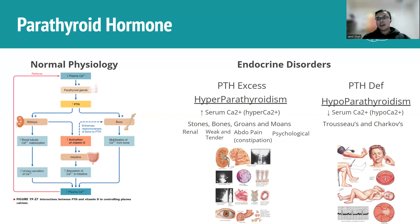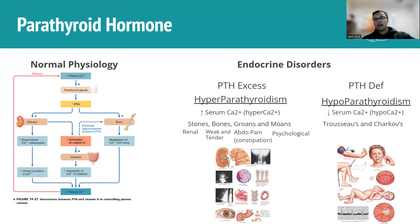Trousseau's sign: clamp the patient's arm with a blood pressure cuff and look for a carpal-pedal spasm, where the hand twitches at the wrist and fingers. Chvostek's sign: tap the facial nerve and look for a twitch in the jaw muscles — again a sign of hypocalcemia. In hypocalcemia all muscles become very twitchy, whereas in hypercalcemia muscles are less active, explaining constipation.